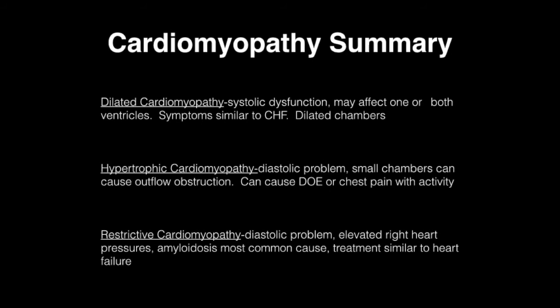To summarize: dilated cardiomyopathy causes systolic dysfunction, may affect one or both ventricles, involves large dilated chambers, and presents similarly to CHF. Hypertrophic cardiomyopathy is a diastolic problem with small chambers, a systolic murmur, and a thickened interventricular septum causing outflow obstruction — presenting with dyspnea on exertion and exertional chest pain. Restrictive cardiomyopathy is also a diastolic problem with small chambers, elevated right heart pressures, amyloidosis as the most common cause, and treatment similar to heart failure with a focus on diuretics.